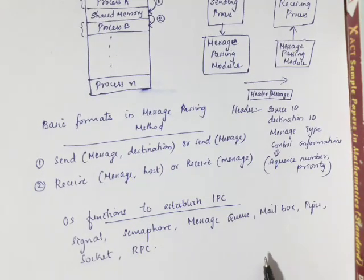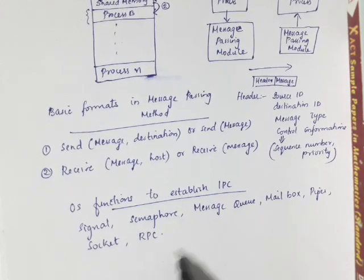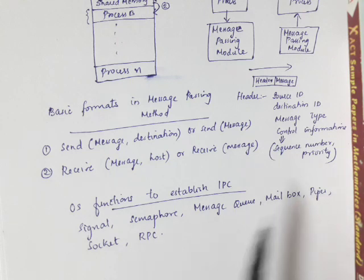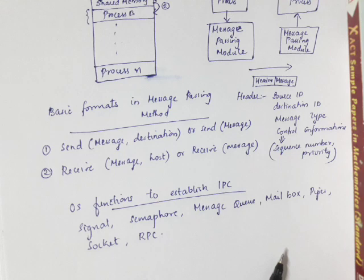The operating system provides functions to establish IPC. These functions include: signal function, semaphore function, message queue, mailbox, pipes, socket, and RPC — remote procedure call. We will learn these functions in the coming videos in detail.